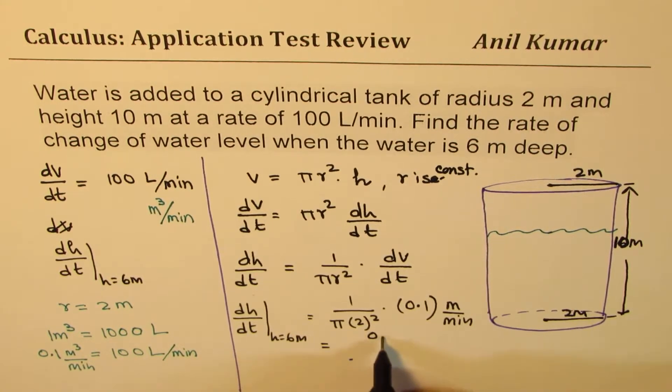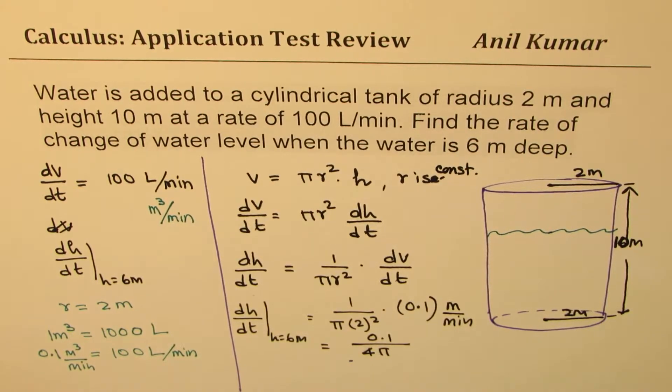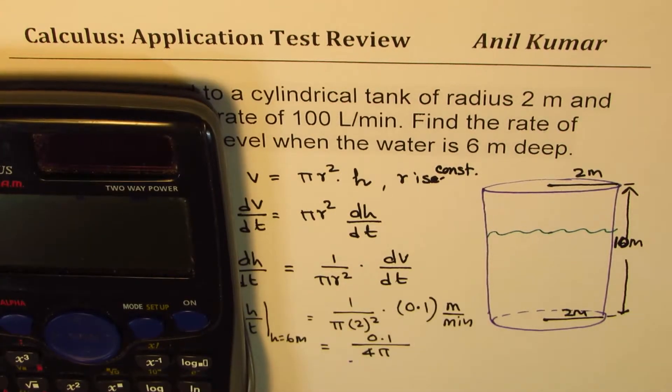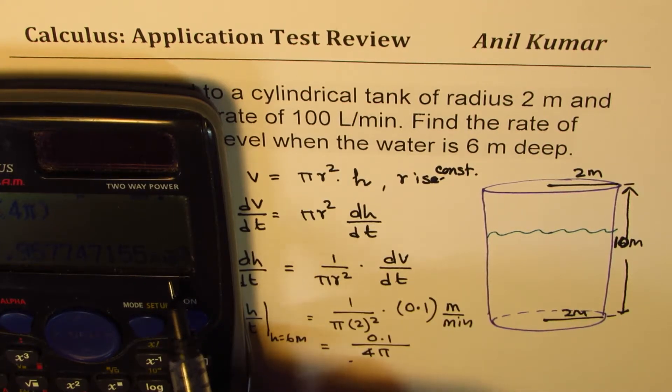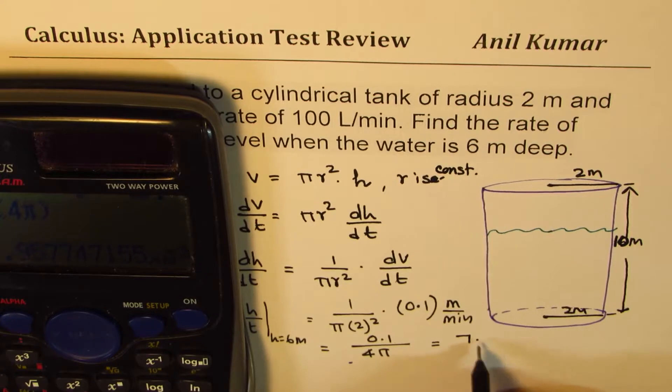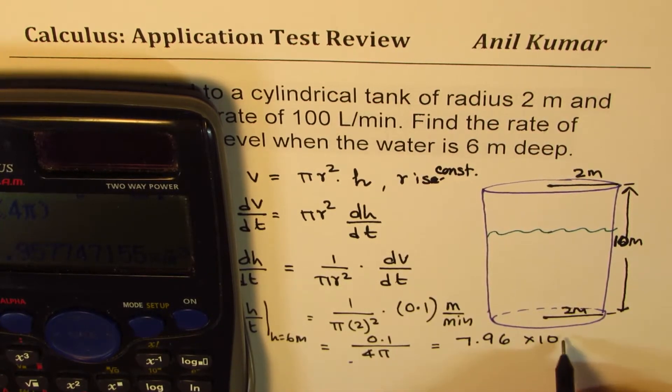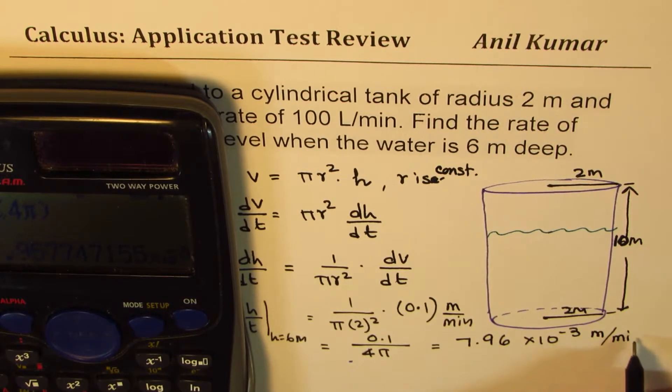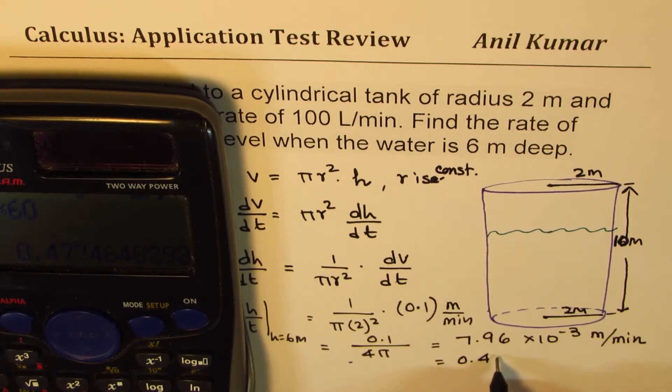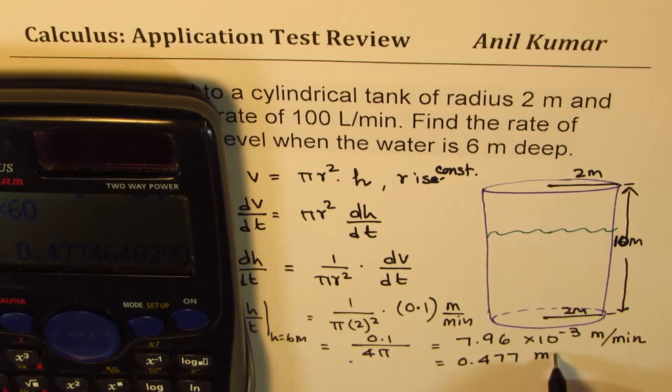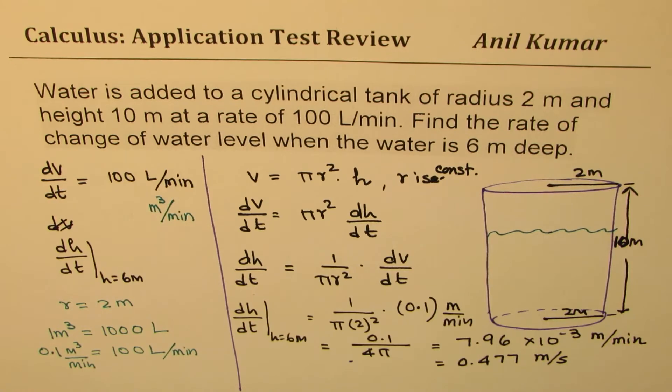So the exact value, of course, is 0.1 over 4 pi. We can write decimal. So 0.1 divided by, within brackets, 4 times pi. So it should be in brackets. Otherwise, you could do another mistake. So it gives you 10 to the power of minus 3 there. So it is 7.96 times 10 to the power of minus 3 meters per minute. So that is, you could write this in seconds by multiplying it by 60. So you get around 0.477 meters per second. And you can times it by 100 to get 47.7 centimeters per second.